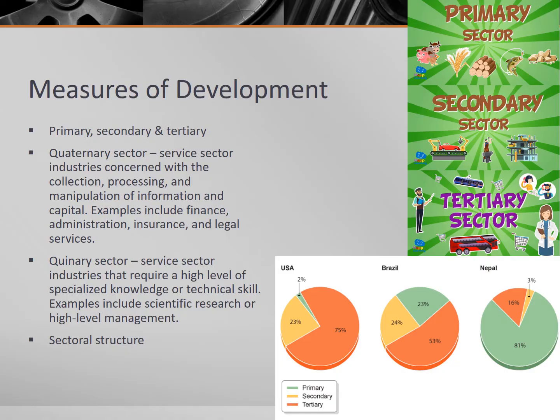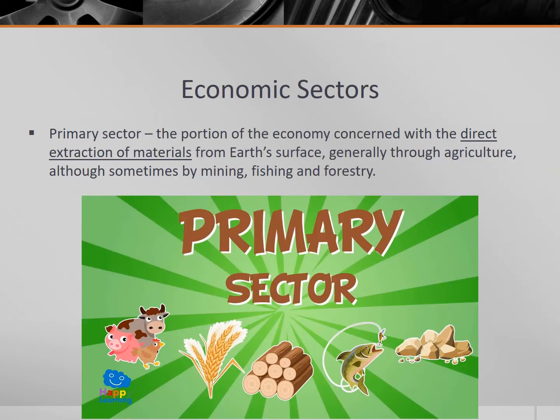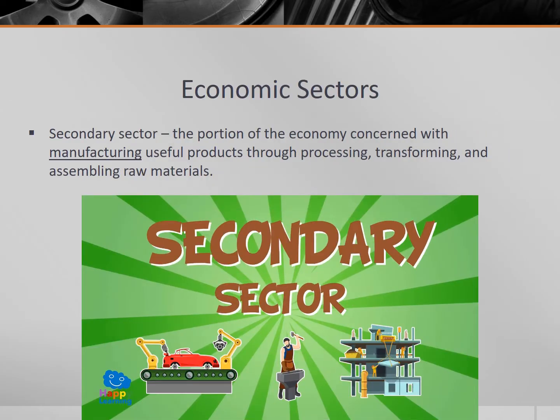Let's begin by reviewing the different sectors of the economy. The primary sector is the portion of the economy concerned with the direct extraction of materials from earth's surface, generally through agriculture, although sometimes by mining, fishing, and forestry. The secondary sector is the portion of the economy concerned with manufacturing useful products through processing, transforming, and assembling those raw materials of the primary sector.